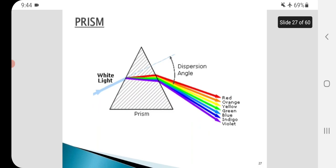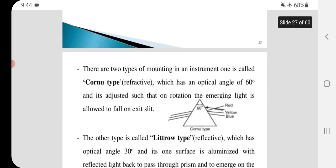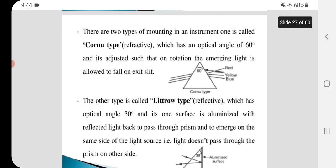Prism structure: Light passes through prism and then seven colors appear. There are two types of mounting in an instrument.